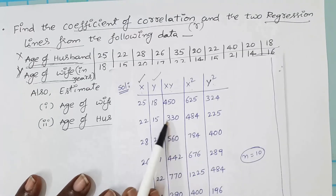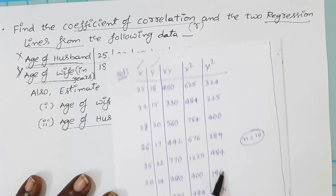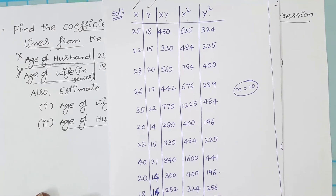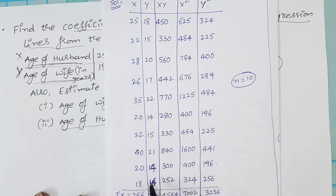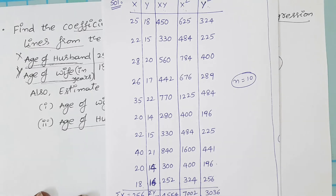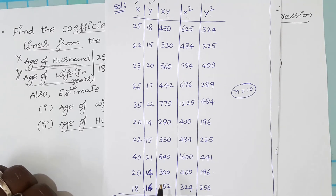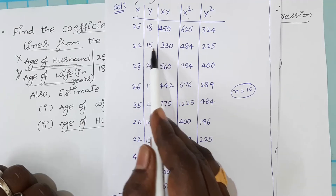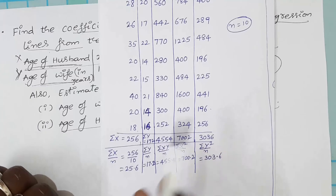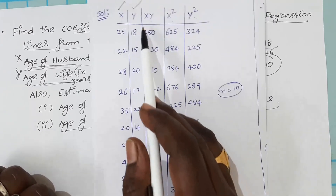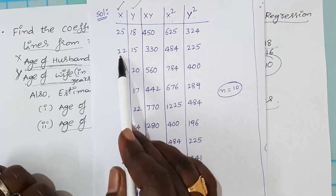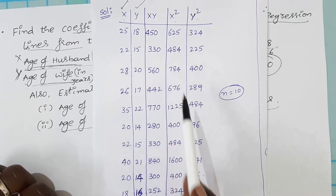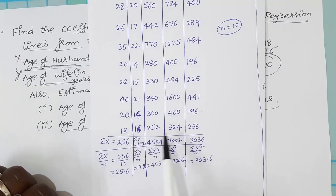The x values are: 25, 22, 28, 26, 35, 20, 22, 40, 20, 18. Copying the y values from the given data into the second column. Now multiply respective x and y values: 25×18 = 450, 22×15 = 330, and 18×16 = 252, and so on. For x²: 25² = 625, 22² = 484, 28² = 784, up to 18² = 324. You can use a scientific calculator to get all these values easily.